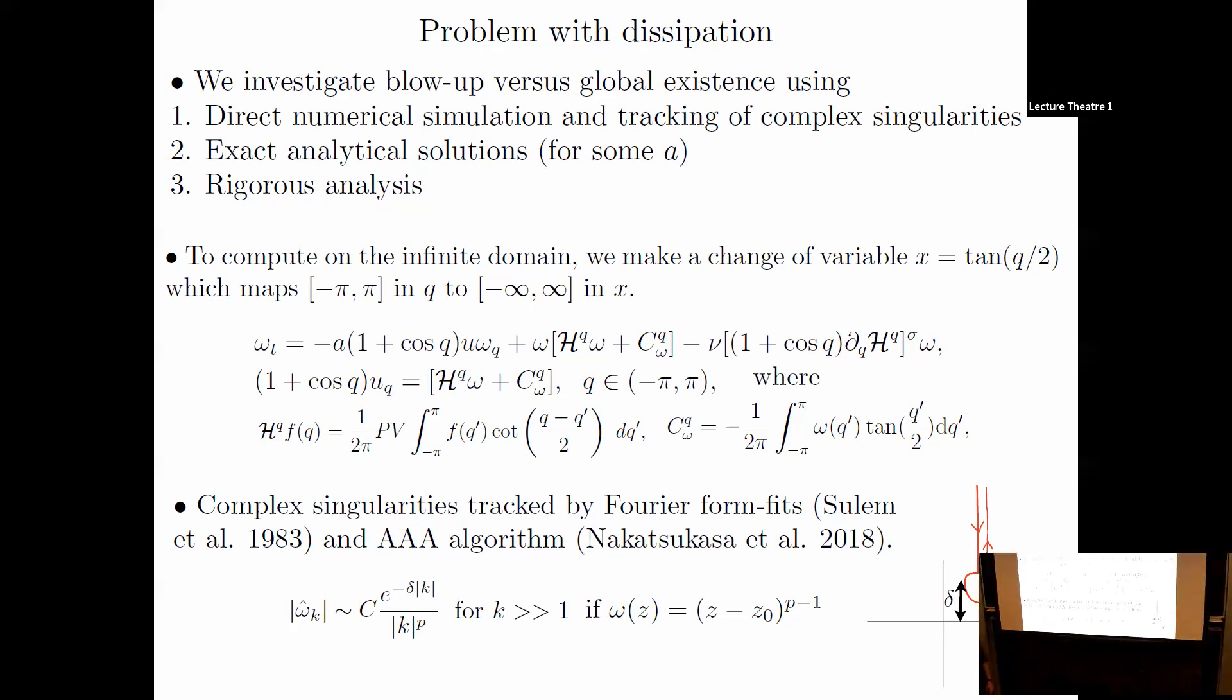It's a little more challenging to compute on the real line. We do something very nice there: we map the infinite domain to a periodic box. The Hilbert transform on the infinite line then transforms to the periodic Hilbert transform. That's nice—you can evaluate it with FFTs plus a constant term. So now the real line problem is as easy to do as the periodic problem.